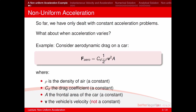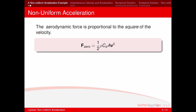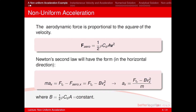As an example, we can consider the aerodynamic drag on a car, given by the equation on screen. For this case our velocity is not constant — the aerodynamic force is proportional to the square of the velocity. Newton's second law in the x-direction gives F = ma, where F is the sum of all forces: our propulsion force minus aerodynamic drag. Rearranging gives an equation for acceleration that depends on velocity, so it is not uniform acceleration.